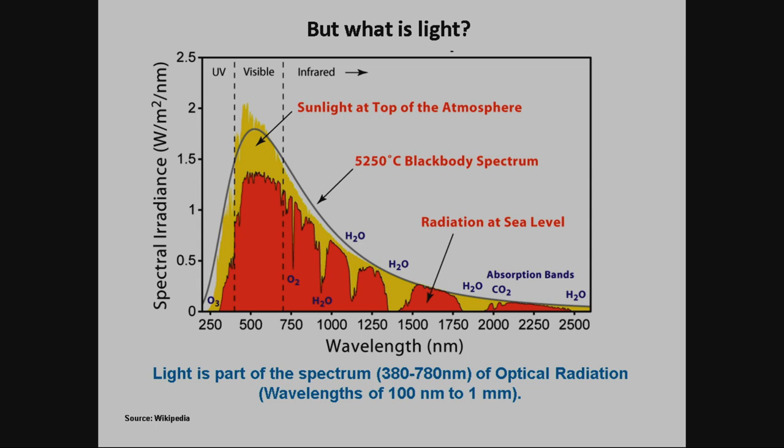What is light? For a lighting technician, light is just the visual part of the optical radiation. If you talk about this radiation, UV is also radiation. So you have to make a difference between radiation and light. A light planner usually uses this part of the spectrum. You see this is the atmosphere, and the atmosphere absorbs a lot of water.